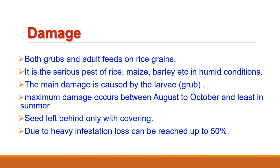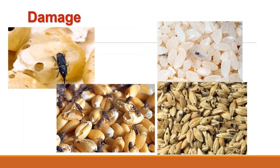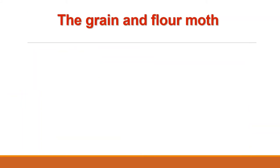Sitophilus oryzae is the most destructive insect pest of stored grains in the world. Both grubs and adults feed on rice grains, less commonly on wheat and maize. In humid conditions, infestation is more severe. Only the skin of the grain is left behind and the grain becomes incapable of germination and unfit for human consumption. Maximum damage in storage occurs between August and October and is least in summer. Due to heavy infestation, losses can reach up to 50%.